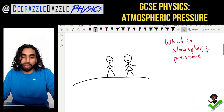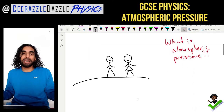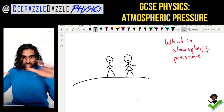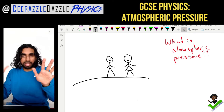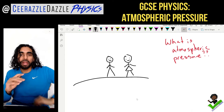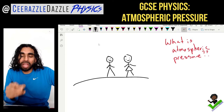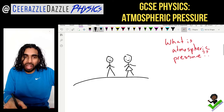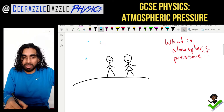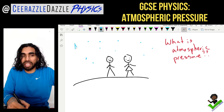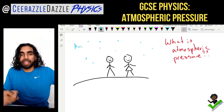So what exactly is atmospheric pressure? Here's the ground, and let's say there are two of you standing over there. Hopefully we have an idea that around us we have air — there are loads of air molecules all around us.